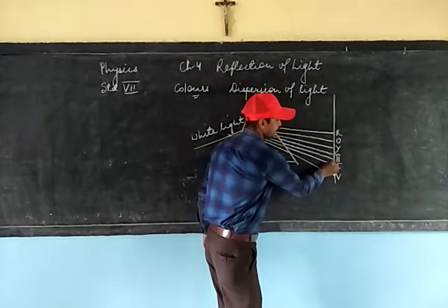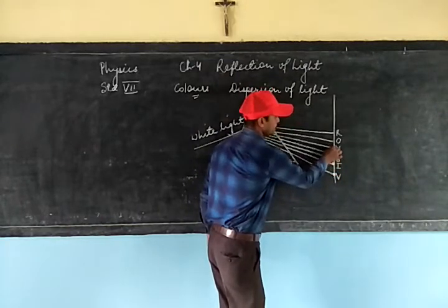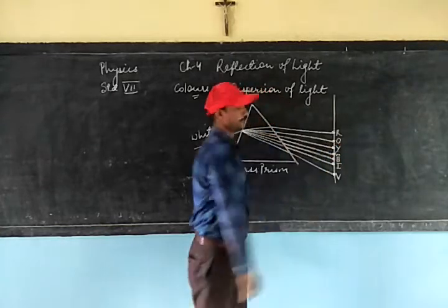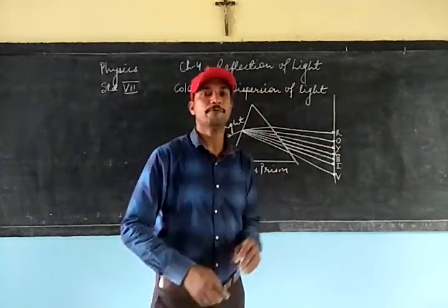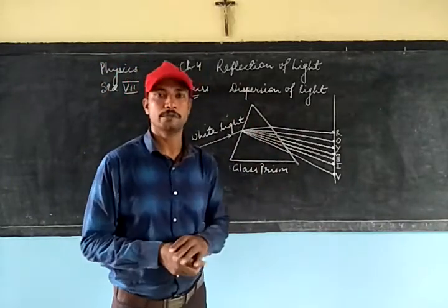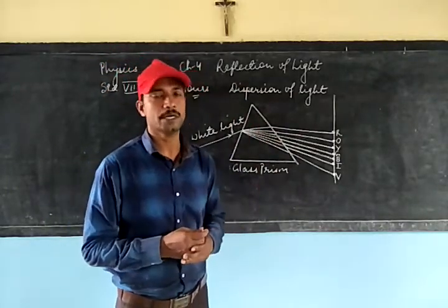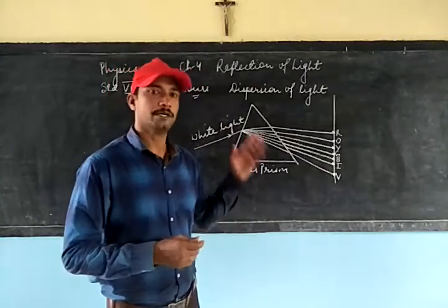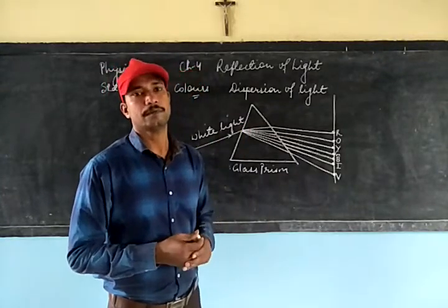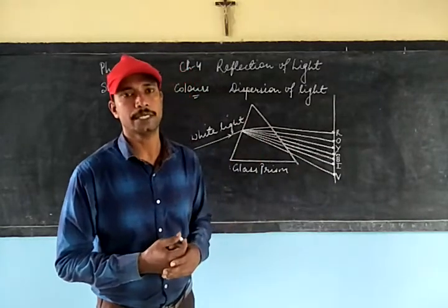The seven different bands of colors that appear are violet, indigo, blue, green, yellow, orange, and red. These seven different bands of colors can be formed on the screen, and this band of colors is nothing but the white light that already had these colors in it.